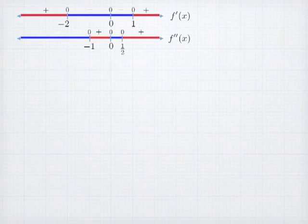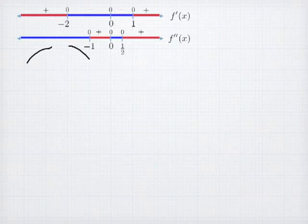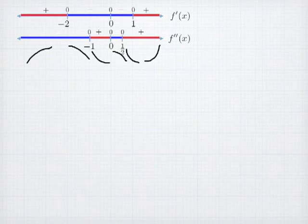We slice the number lines into different regions, and in each sub-region we have a basic shape. In the first shape we're increasing and concave down. In the next region we're decreasing and concave down. Then decreasing and concave up, followed by decreasing and concave down, then decreasing and concave up, and finally increasing and concave up. We want to put these different shapes together, tacking them end to end.